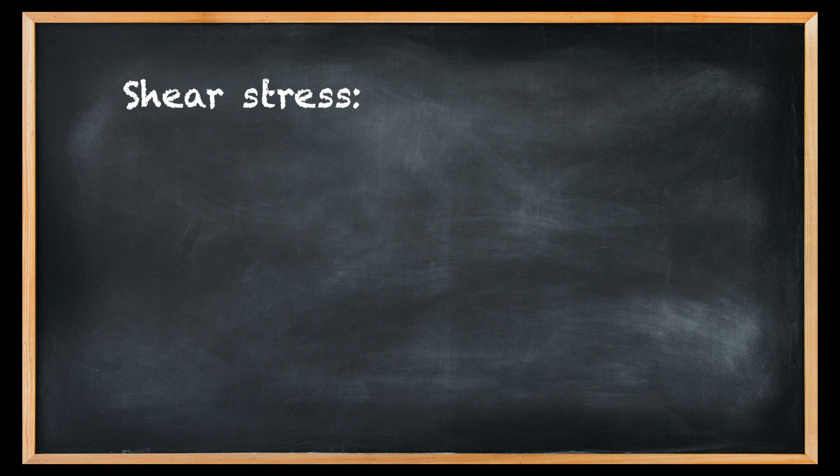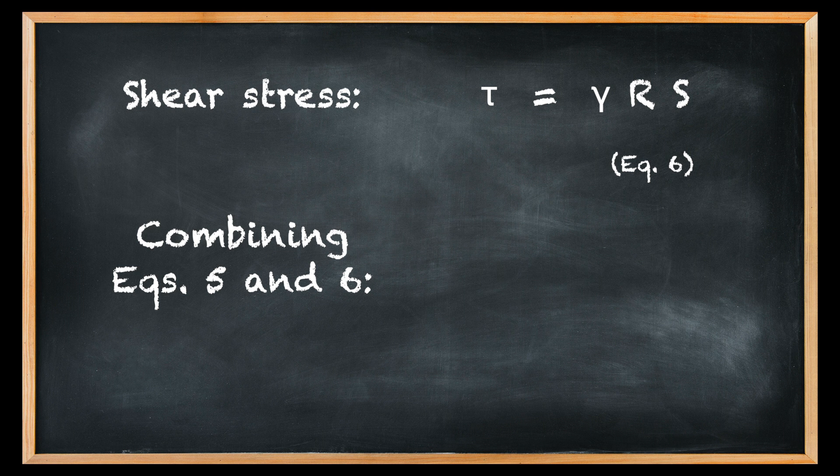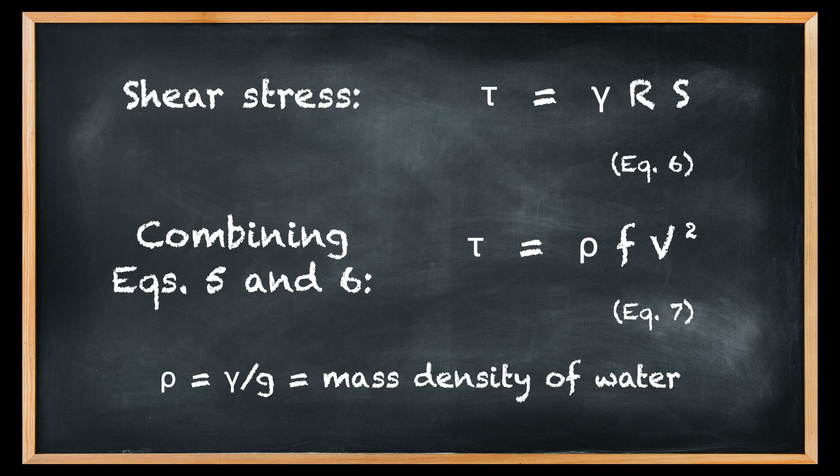The shear stress is defined as follows. Combining equations five and six, the quadratic equation for shear stress is obtained, in which ρ equals γ over G equals mass density of water.